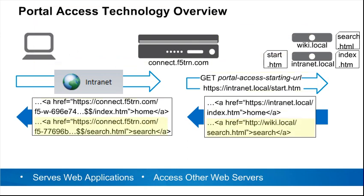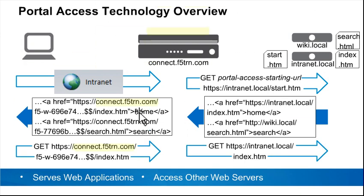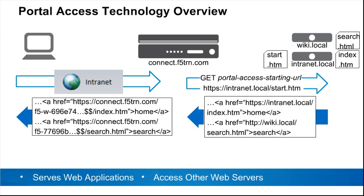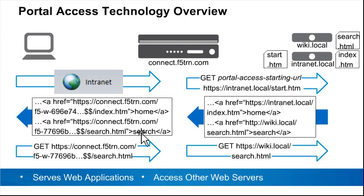It is important to note that portal access can access multiple web application servers on the internal network. When the user clicks on a link on the page just received, the web browser requests the new page. The URL for the page points back to BigIP; otherwise, the page would be unreachable. Once APM receives the HTTP request, it decodes the URL and sends it to the correct internal server. The user can click on a link pointing to a different internal server, and APM decodes that request and sends it to the appropriate server. Portal access is sometimes referred to as HTTP tunneling because it can be used to connect to any internal web application.